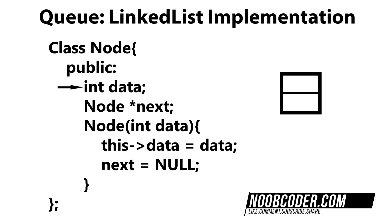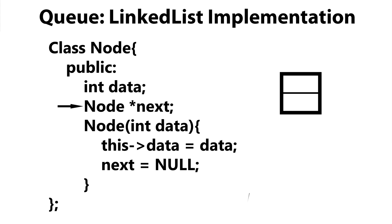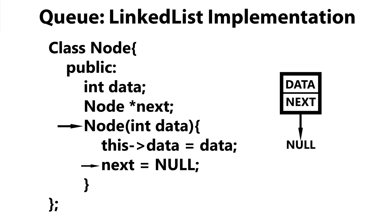And it has a pointer to the next node. You can see that we have our one argument constructor — we pass in our data, we set our data, and then we set next equal to null. Now if you want to make data and the next pointer private and then use getters and setters, you're more than welcome to do that. But to make this example as simplistic as possible, we're going to make everything public.